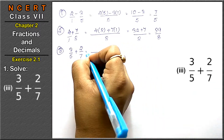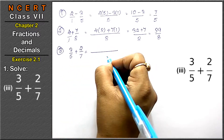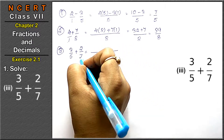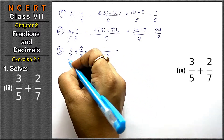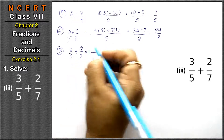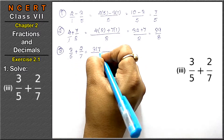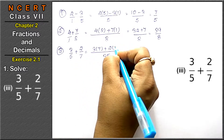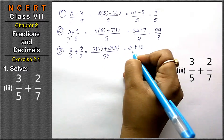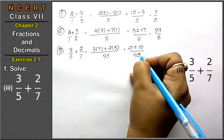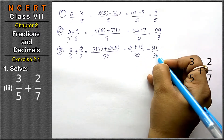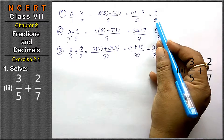5 and 7 have no common factor, so the LCM is 35. Multiply directly: 3 into 7 plus 2 into 5, that means 21 plus 10 upon 35, equals 31 upon 35 is the answer. We cannot simplify this further, so we leave it as is.